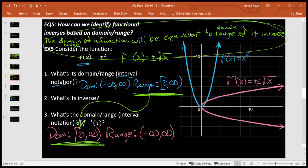That does it for this video. Just to quickly recap, if a function is inverse to another one, their domain and range will be equivalent to the opposite of the other. So the domain of the function will be equal to the range of the inverse, and the range of the function will be equal to the domain of the inverse.